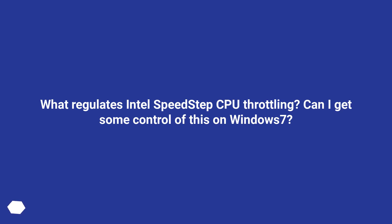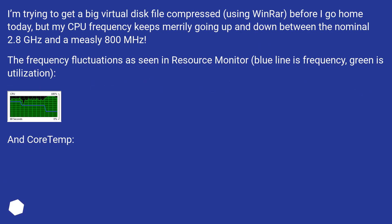What regulates Intel Speedstep CPU throttling? Can I get some control of this on Windows 7? I'm trying to get a big virtual disk file compressed using WinRAR before I go home today, but my CPU frequency keeps merrily going up and down between the nominal 2.8 GHz and a measly 800 MHz.